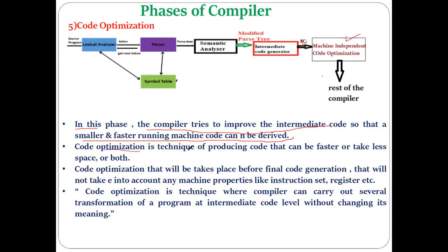Code optimization is a technique of producing code that can be faster, take less space, or both. It takes place before the final code generation and does not take into account any machine properties like instruction set or registers. Code optimization is a technique where the compiler carries out several transformations of a program at the intermediate level without changing its meaning — the compiler rearranges the code without affecting the final output of the program.